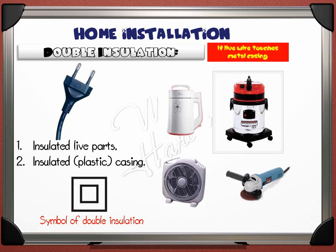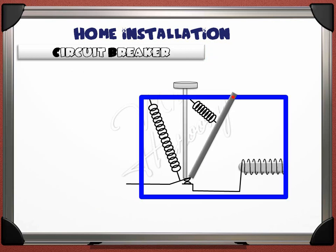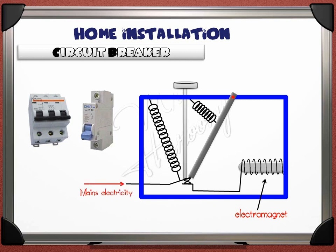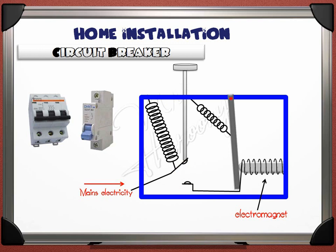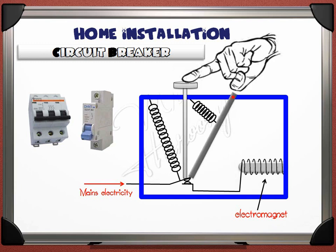The circuit breaker can replace the fuse and is better in many cases. It contains an electromagnet connected to the live wire of the mains electricity, which tries to attract a gray arm. When current increases, the electromagnet becomes strong enough to pull this arm; the spring then pushes the button out and opens the contacts, so the current cuts and stops. When the problem is fixed, simply push the button again and everything will normally work. The advantage of the circuit breaker over the fuse is that a fuse needs to be replaced when it blows, but for the circuit breaker all you need is to push the button again to its working position.